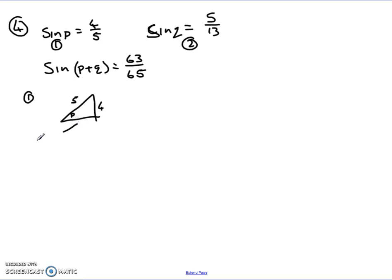To get this missing side here, I can use Pythagoras. Now, it's a shorter side, so I know that I'm looking to do the square root of 5 squared, take away 4 squared. 5 squared is 25, 4 squared is 16, 25 minus 16 is 9, so it's square root of 9, which is 3. So I know that this side here has a length of 3.